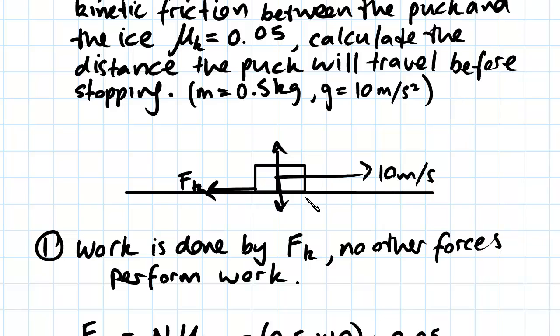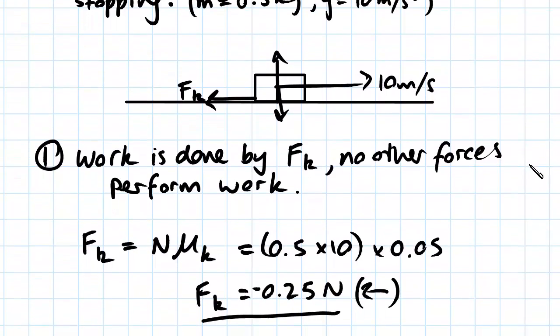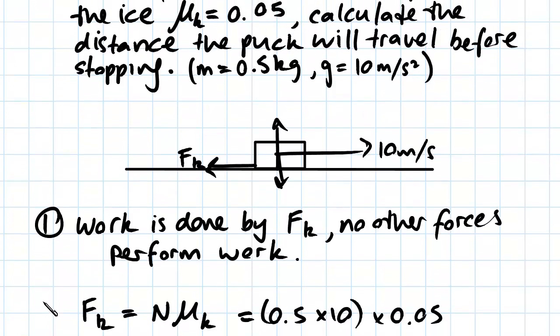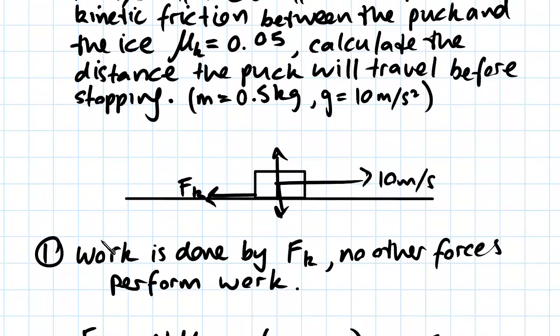So what we have to consider is the force of kinetic friction. In doing that, we do actually need to work out the normal force. We're going to go ahead and work out the gravity load and then subsequently the normal force. So the gravity load is just going to be 0.5 times 10, so mass times acceleration gives us a force. That's going to be 5 newtons, and that means our normal force is also going to be 5 newtons.